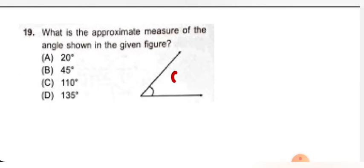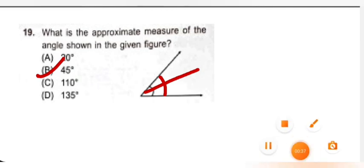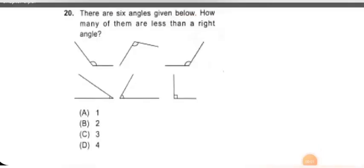Question number 19: what is the approximate measure of the angle shown in the given figure? We need to tell the value of this angle. You can see that this angle is near the base, so it is not greater than 90 degree — so C and D are already wrong. Now 20 degree would be very small, but this is more than 20 degree, so approximately 45 degree. Option B is correct.